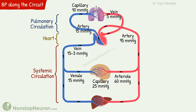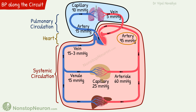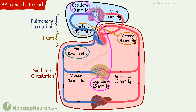From these numbers we can see two things. First, pressures in systemic circulation are higher than those in pulmonary circulation. Systemic arteries have a pressure of about 95 mmHg, whereas pulmonary arteries have only about 15 mmHg. In systemic capillaries, pressures are about 25 mmHg, higher than the 10 mmHg in pulmonary circulation. In veins, the systemic side ranges from 15 to 3 mmHg, whereas pulmonary veins are only 5 mmHg. Thus, the systemic circulation has high pressures.